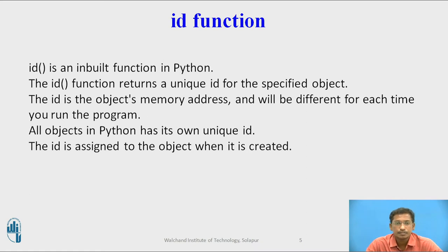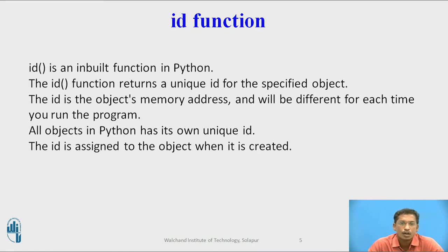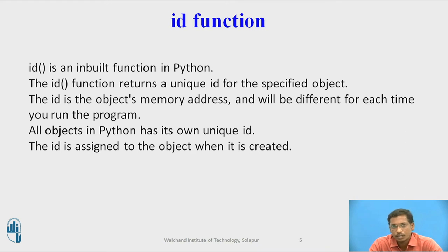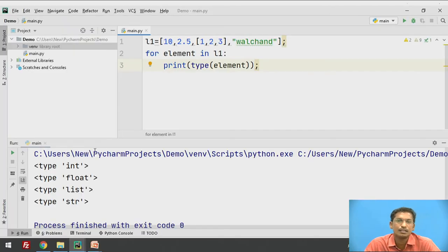The next function is the id function. id is a built-in function in Python. The id function returns the unique ID for a specific object. The ID is the object's memory address, which will be different each time you execute the program. All objects in Python have their own unique ID, assigned to each object whenever it is created. So whenever you declare variables in your Python program, memory is allocated to that variable, and each variable has its own unique ID. To print that ID, we use the id function.